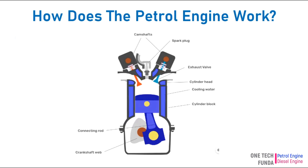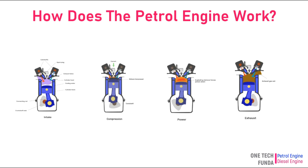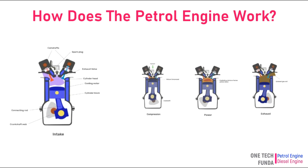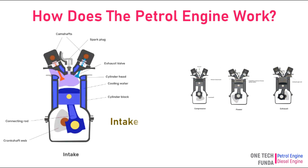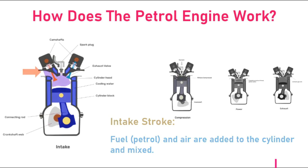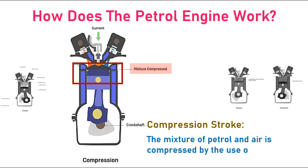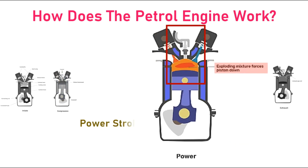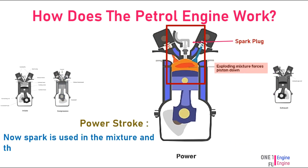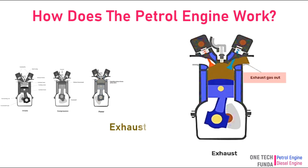How does the petrol engine work? Working of a petrol engine can be expressed by four steps. Intake stroke: petrol and air are added to the cylinder and mixed. Compression stroke: the mixture of petrol and air is compressed by the use of a crankshaft. Power stroke: a spark plug ignites the mixture and forces the piston down. Exhaust stroke: gases go out from the exhaust valve.